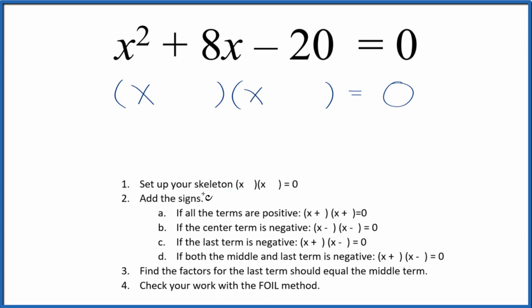Once we have that, we can add the signs. So we have the last term here is negative, negative 20. The last term is negative. We're gonna put a positive and a negative in our skeleton equation like this here.